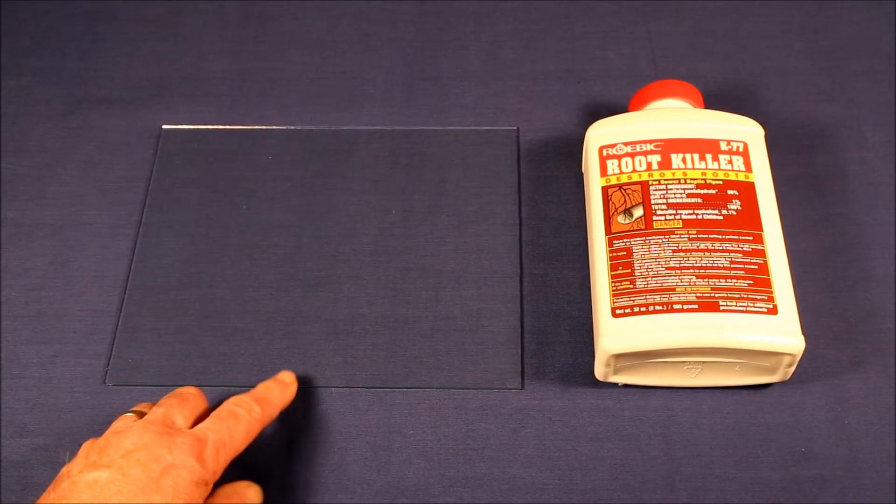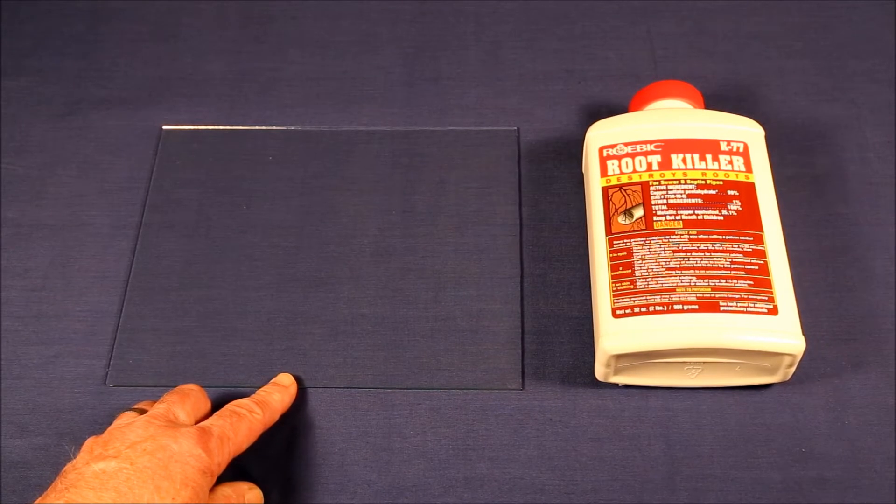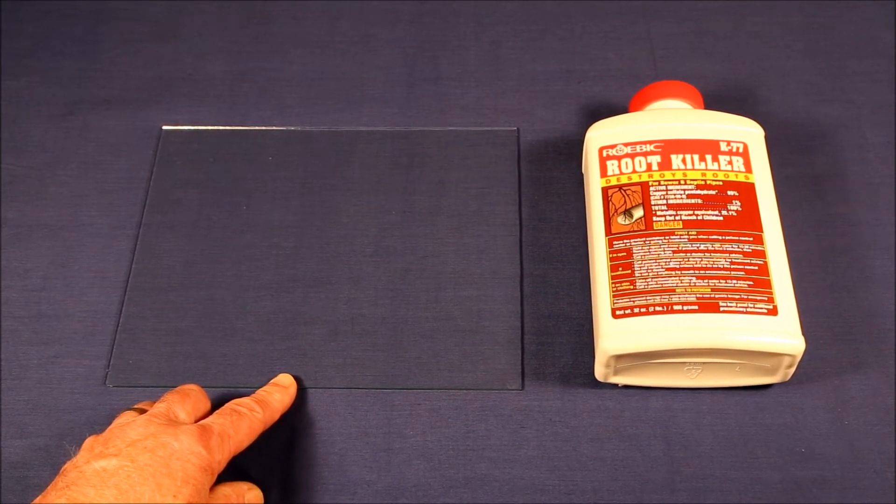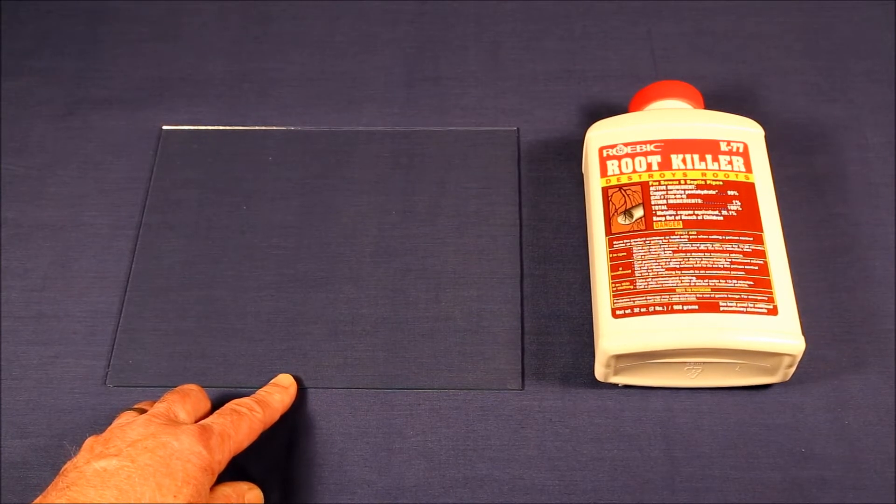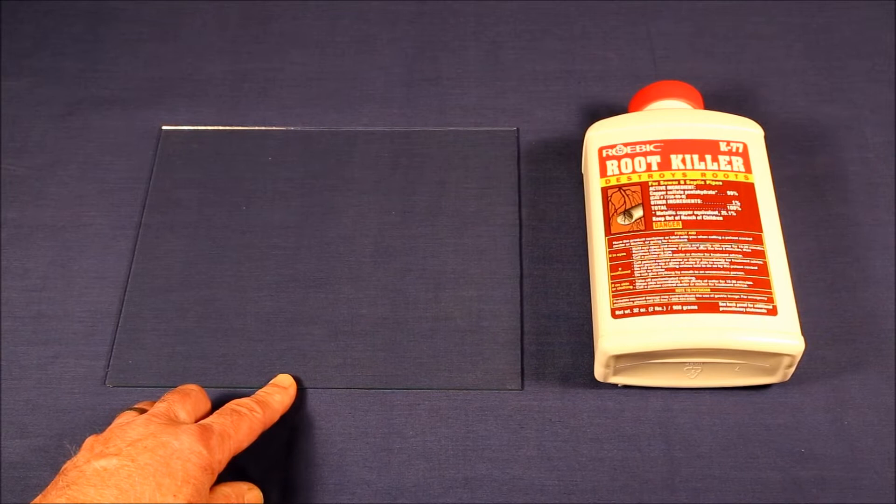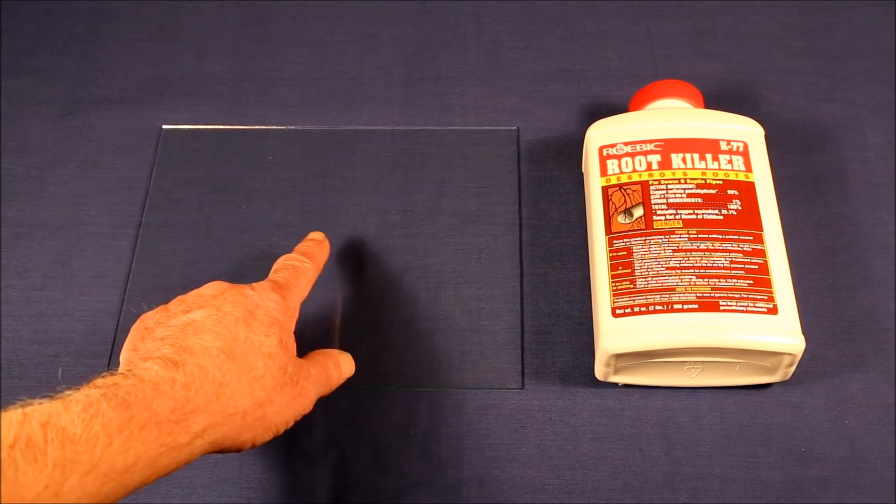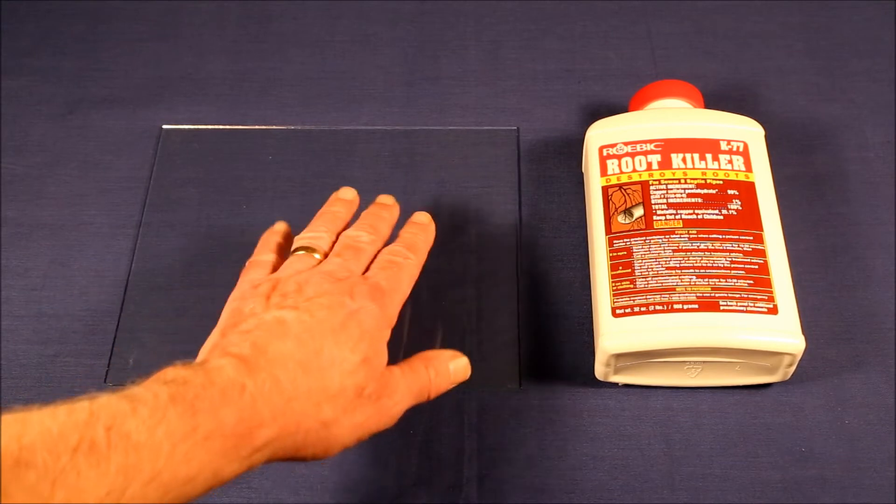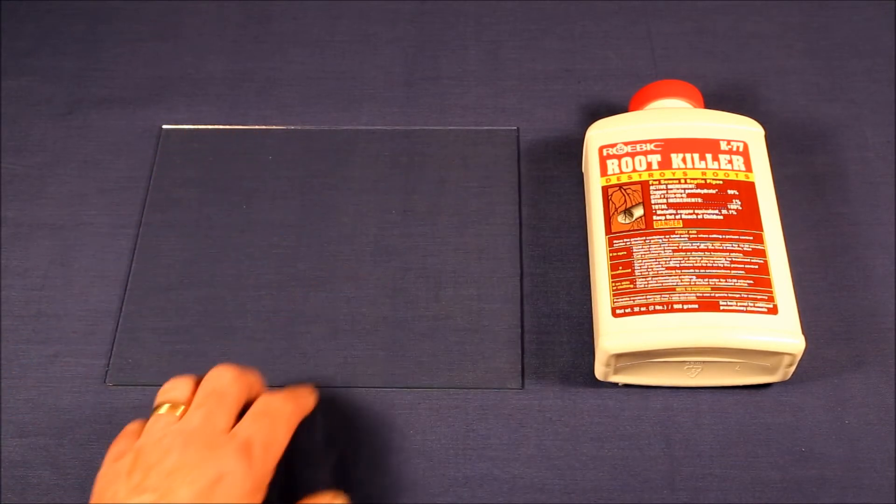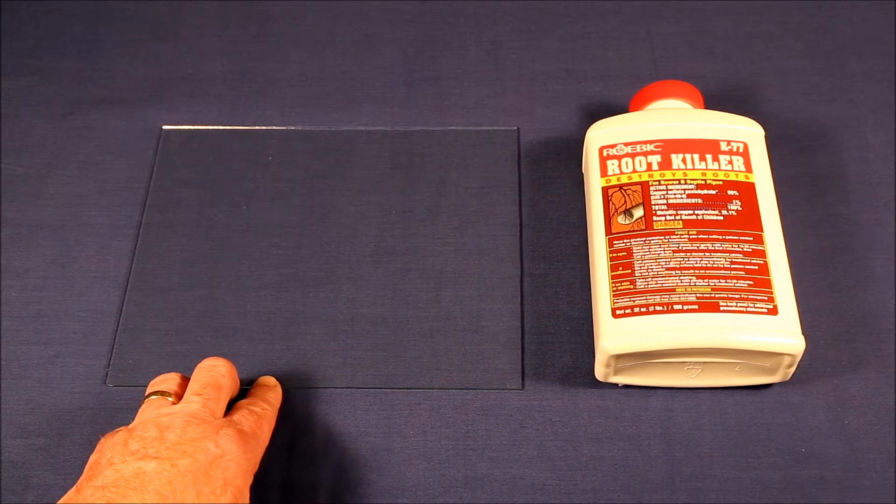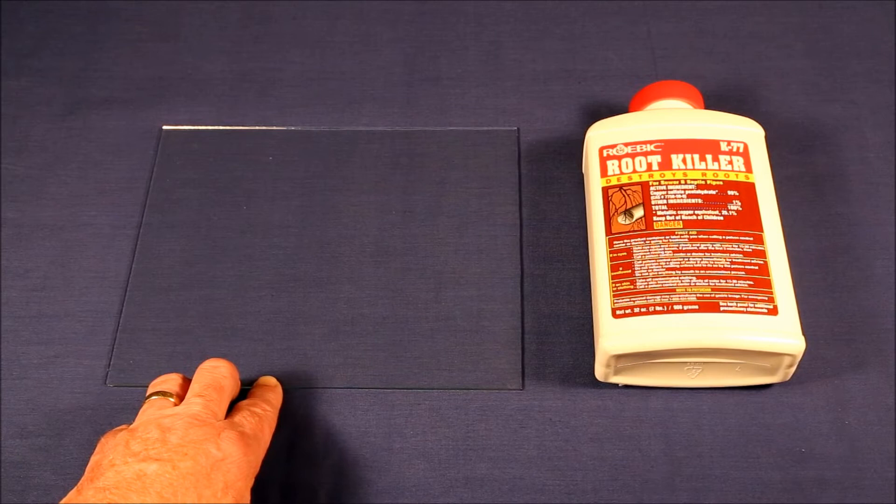This will reduce the surface tension of the copper sulfate solution so it spreads out thinner, and will also make it easier to clean the glass off after you're done growing the crystals. Place one to two teaspoons of the growing solution in the center of the sheet and then spread it around to make an even layer. It's best to wear gloves so that you don't get the copper sulfate solution on your fingers.